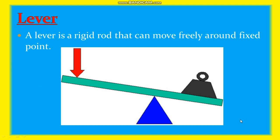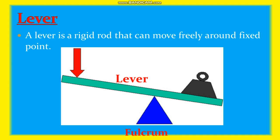Now, what is a lever? A lever is a rigid rod that can move freely around a fixed point. In the picture you are seeing in front of you, the sky blue rod is the rigid rod that is called the lever. Then there is the fulcrum — it is a fixed point around which the lever will move, either going down or coming up.